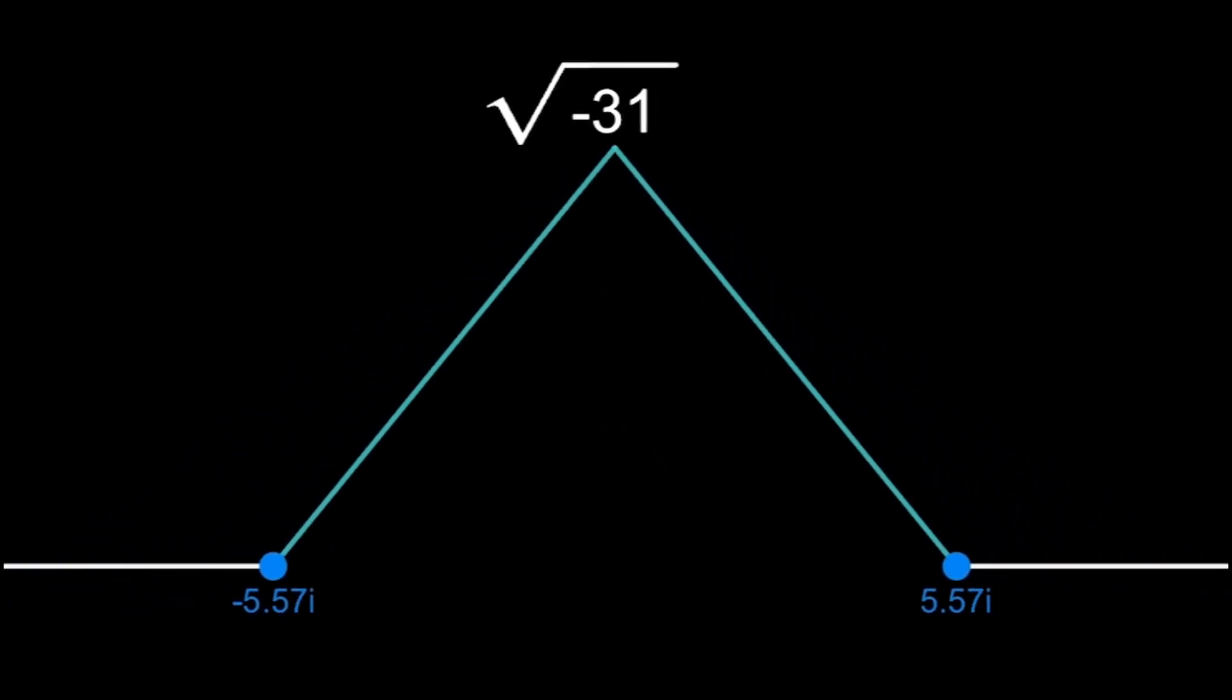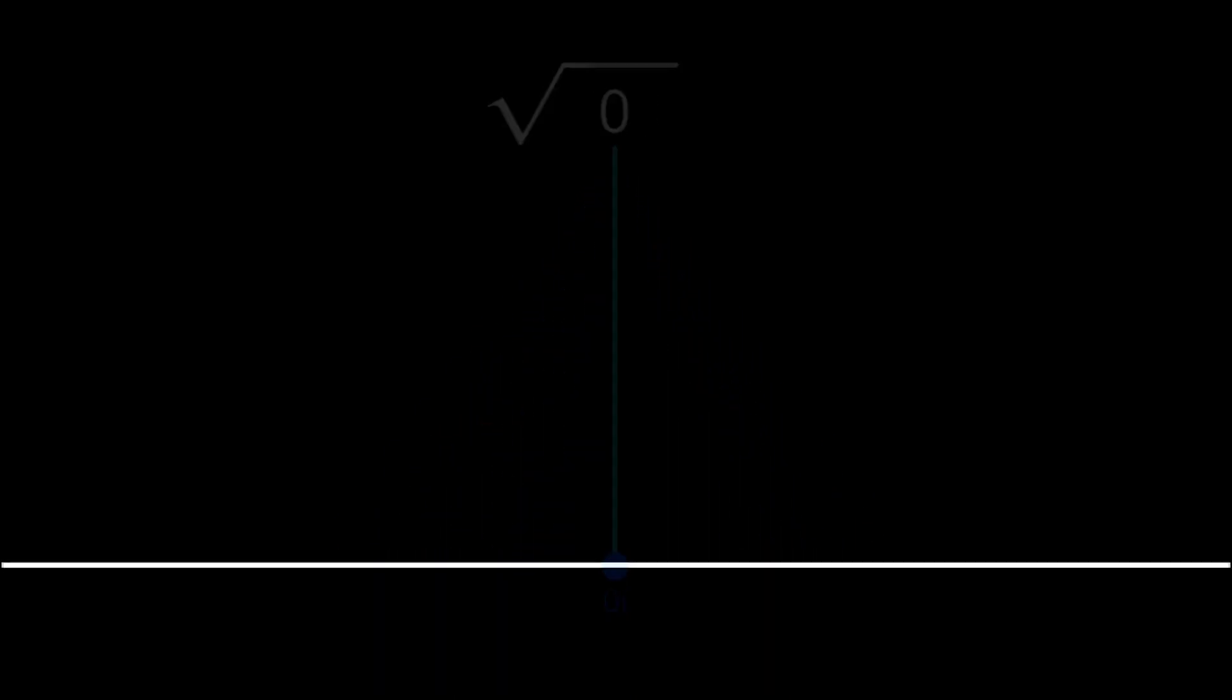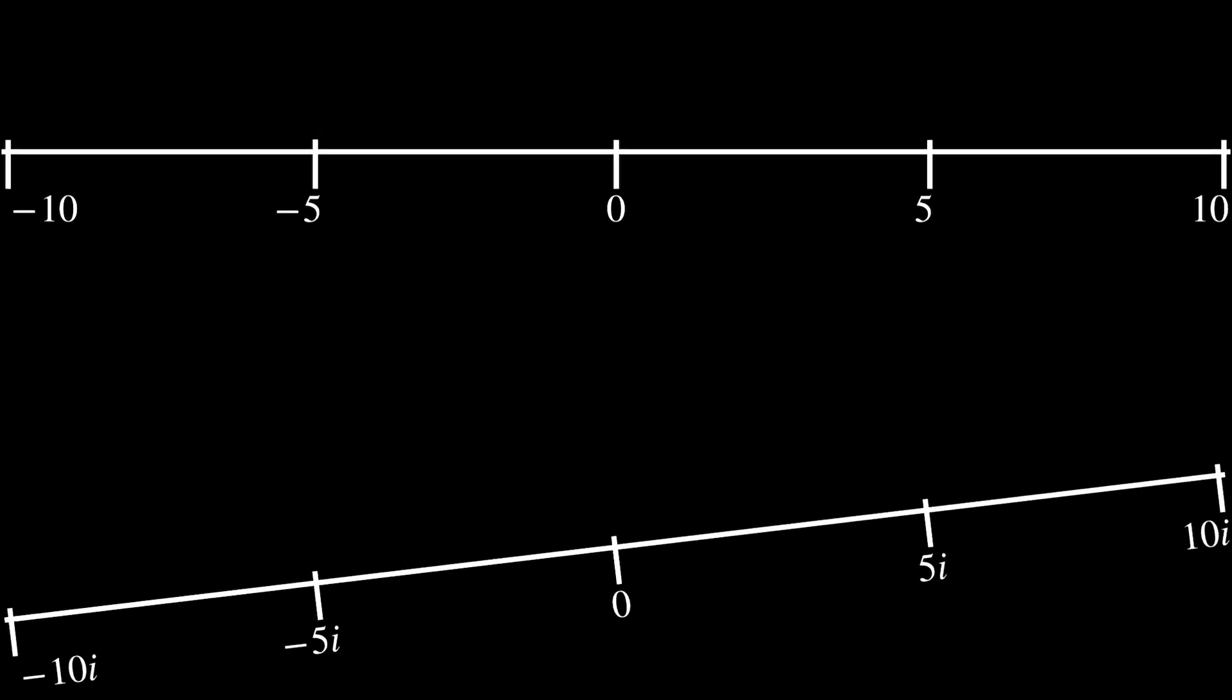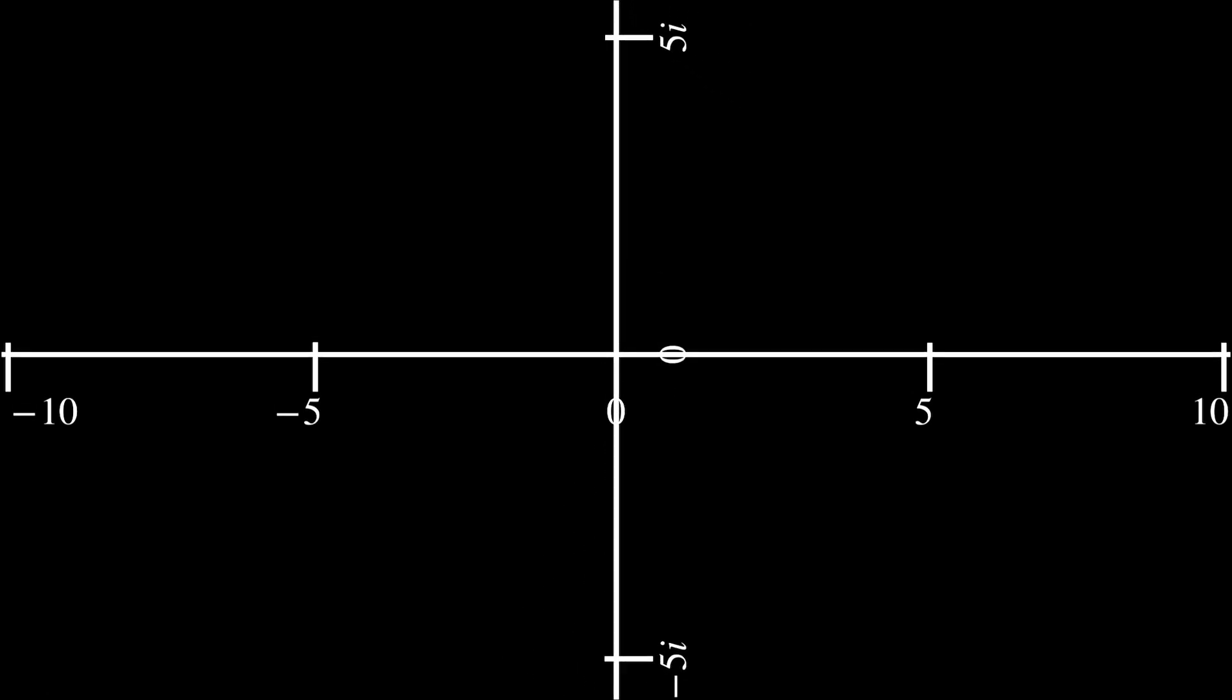Doing this for all the negative numbers would give us a whole new number line. It is like the normal number line, but each number is multiplied by i. Both of these lines share 0, so what if we put this new axis perpendicular to the real numbers? Doing this gives us a whole new plane of numbers. Each number on the plane would have some real part and some imaginary part, so each number on the complex plane can be represented by a plus bi.